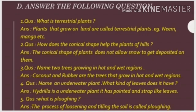Question number 2: how does the conical shape help the plants of hills? Answer: the conical shape of plants does not allow snow to get deposited on them. Question number 3: name two trees growing in hot and wet regions. Answer: coconut and rubber.